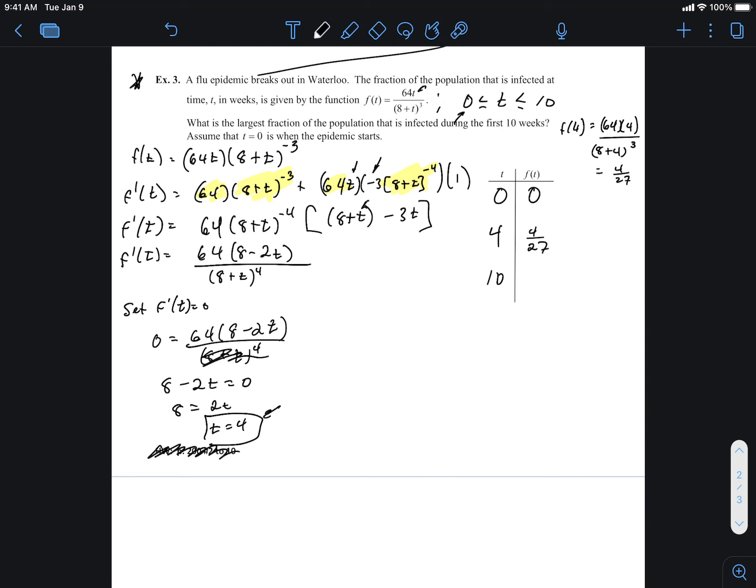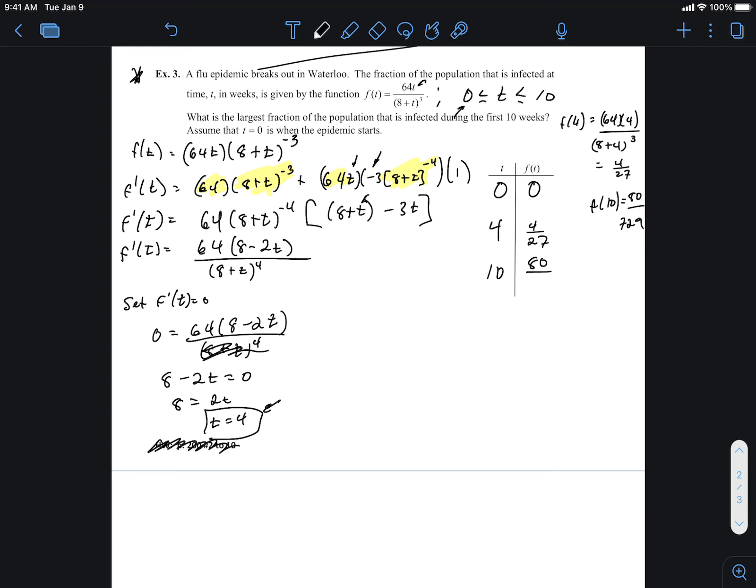And then if I were to plug in 10, f of 10, would equal 80 over 729. This is just if you guys are doing plugging stuff, you don't want to waste the time doing that. 80 over 729. We know something special is happening here. What is it? Well, let's evaluate. What is 4 divided by 27? Well, that's going to be 0.15. And this here is going to be 0.11. And if we were to think of these in percentages, that would be 15% and 11%.